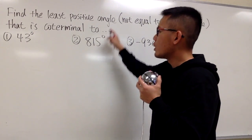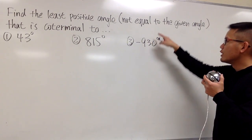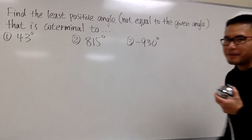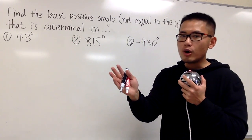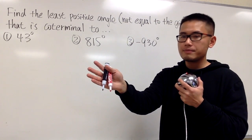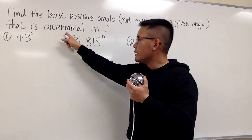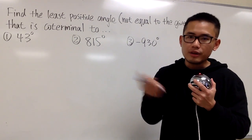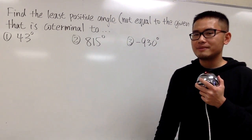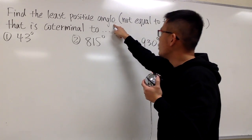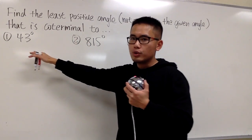We are going to find the least positive angle that's going to be coterminal to the given ones. We don't want our answers to be the same as the given angles. Coterminal angles means whenever you are given an angle, you are facing one direction, and a coterminal angle is a different angle, but you can turn whichever many times you want — at the end, you'll still be facing the same direction. We want to find the least positive angle that's not the same as the given ones.